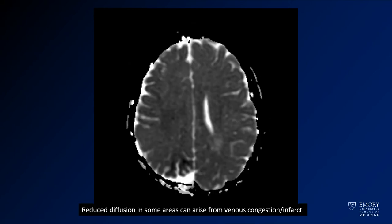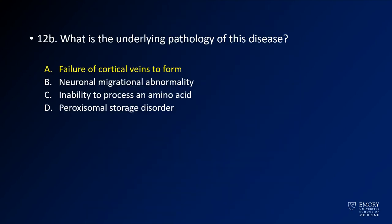Here on diffusion, you can get some areas of diffusion abnormality, which can be a sign of venous congestion and/or infarcts in those areas. As we mentioned, the underlying pathology of this disease is failure of cortical veins to form, which causes venous congestion — manifested by these abnormal medullary veins which we pointed out.